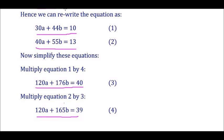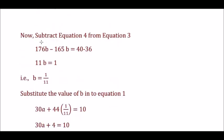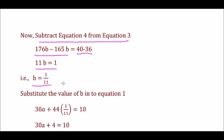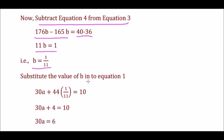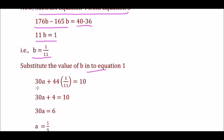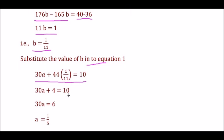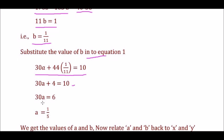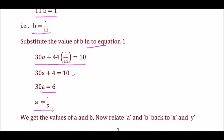Subtract Equation 4 from Equation 3: 176B minus 165B equals 40 minus 39, giving 11B = 1, so B = 1/11. Substituting the value of B into Equation 1: 30A + 44 × (1/11) = 10, which gives 30A + 4 = 10, so 30A = 6 and A = 1/5.